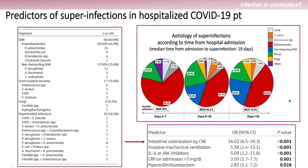Regarding predictors of super-infection in hospitalized COVID-19 patients: a study shows that if there is intestinal colonization of CRE, the risk of having a super-infection is 16 times higher, while the use of IL-6 or JAK inhibitors increases the risk by 5 times, and invasive ventilation also increases it by 5 times. The most common and highest risk factor for developing a super-infection is intestinal colonization.